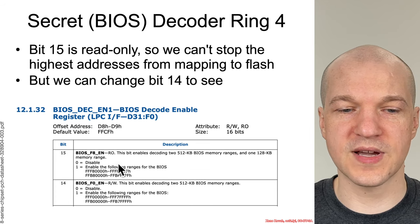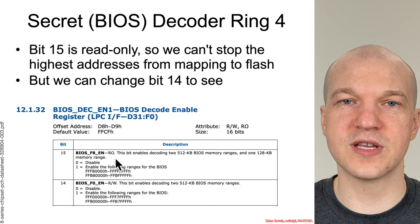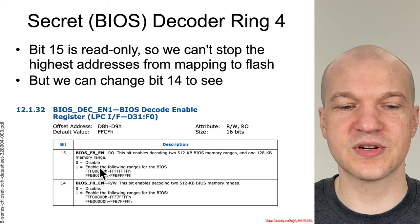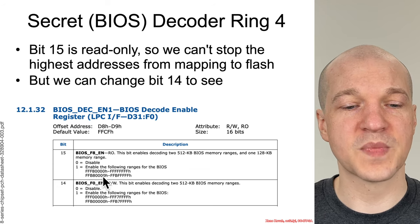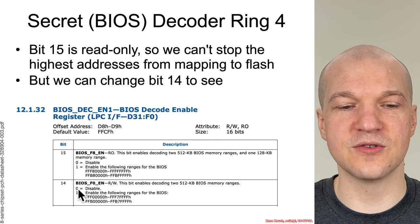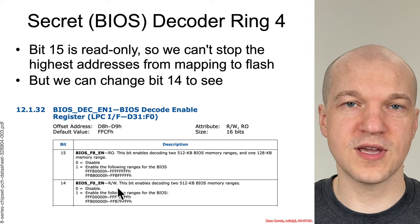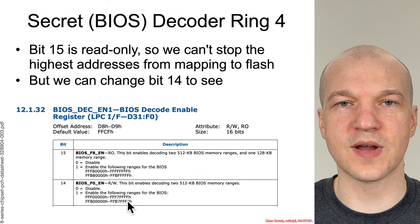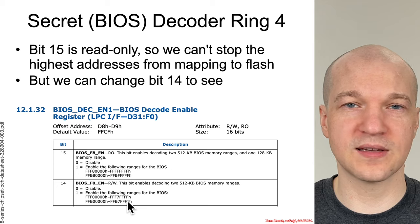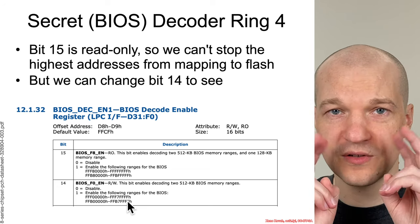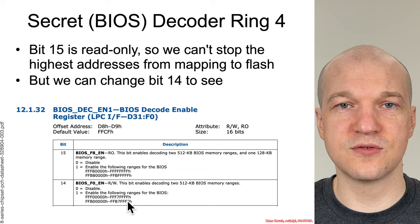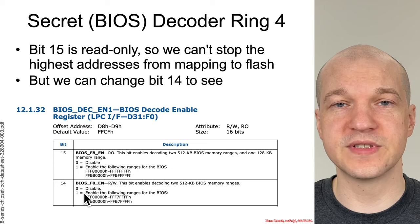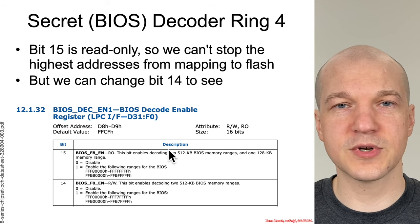The important thing to recognize is that bit 15 is read-only — you can't actually flip it to 0, despite the documentation showing it can be disabled. But bit 14 is read-write. So if we go in and poke that bit and set it to 0, addresses in that range, which the hardware was previously automatically decoding and rerouting to the SPI flash chip, will simply decode to nothing at all. That's what we're going to do in this next lab — poke those bits and see those physical address ranges disappear.